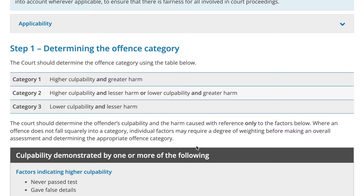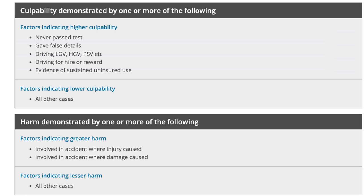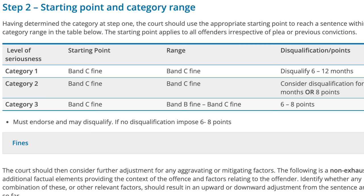Looking at the sentencing guidelines for no insurance, the court applies a similar two-step process — determining one of three categories by assessing culpability and harm. Higher culpability factors include never having passed a test, giving false details, driving various types of vehicles for reward, or sustained uninsured use. On harm, the court considers whether there was an accident causing injury or damage. Unlike driving whilst disqualified, driving with no insurance is dealt with by way of a fine, consideration of a disqualification period, and penalty points.